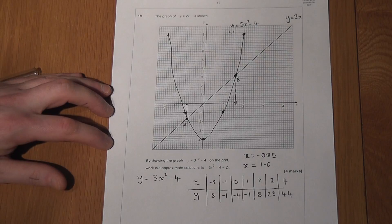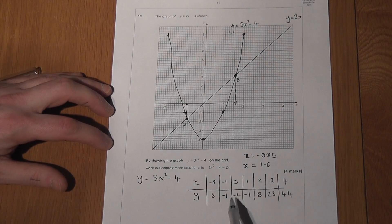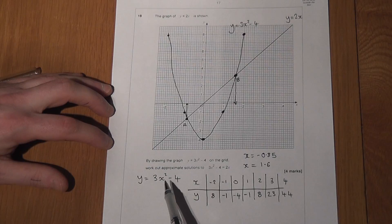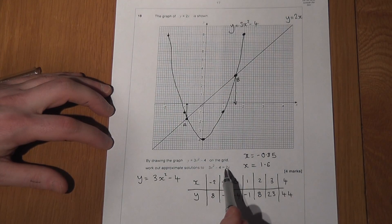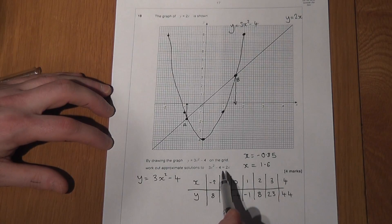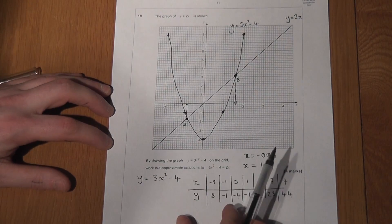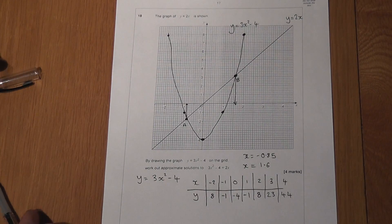So again, I used a table of values to work out some y-coordinates, given the rule, and therefore drew the graph. And to solve where the curve and the line are the same, I had to find out the x-coordinate where the two graphs intersected.